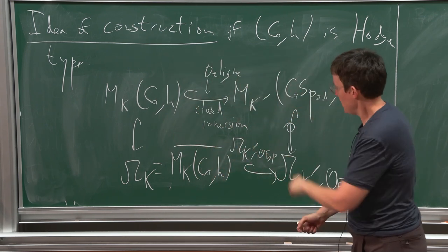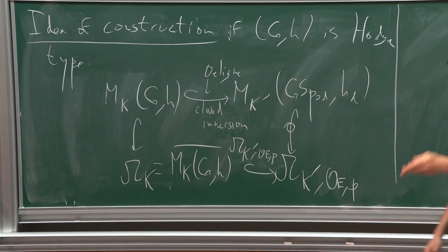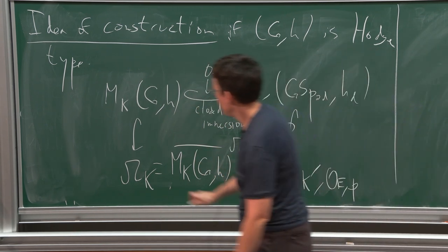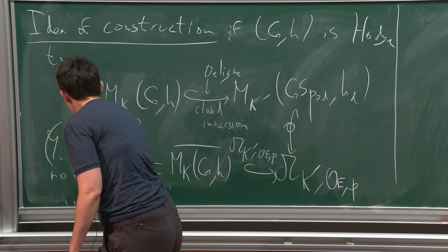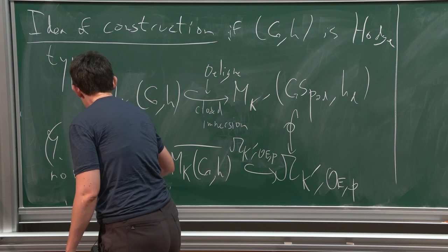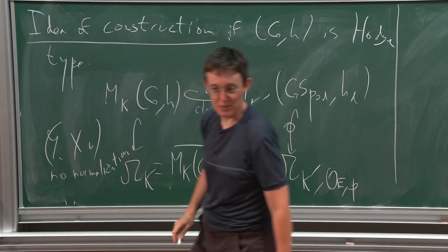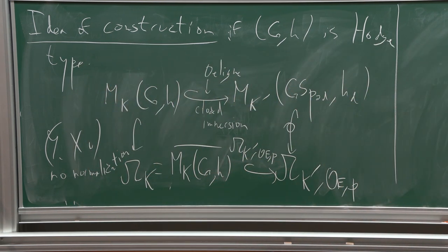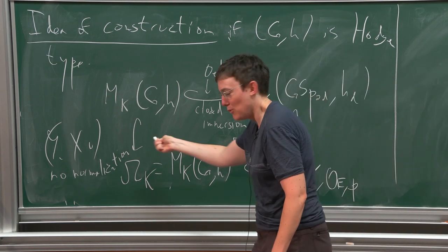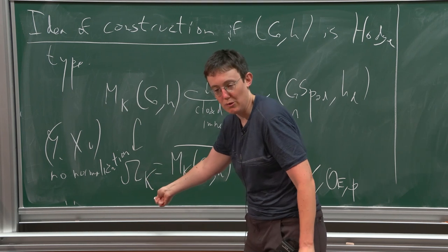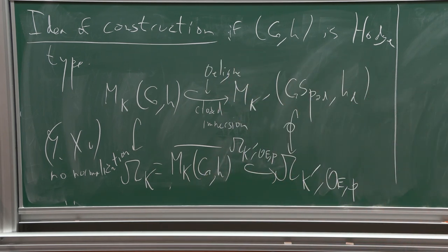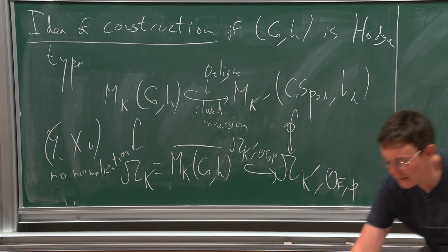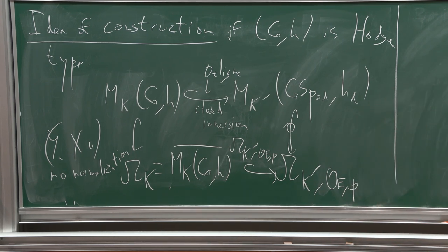Until yesterday I thought you had to normalize the closure, but I was told that the normalization step is not necessary — the closure is already normal. Which is very nice because that means you actually have a description of the integral model, though I don't know how easy it is to use.